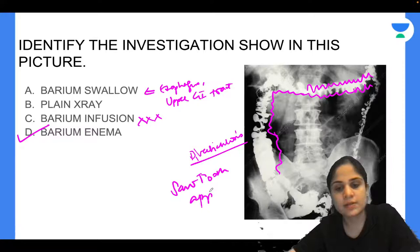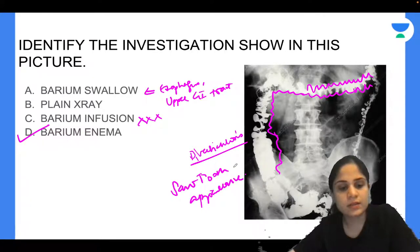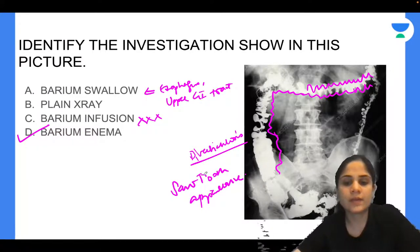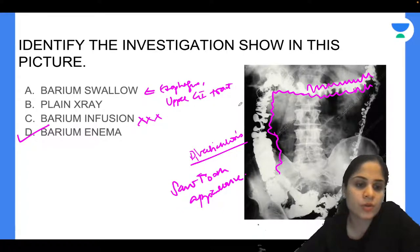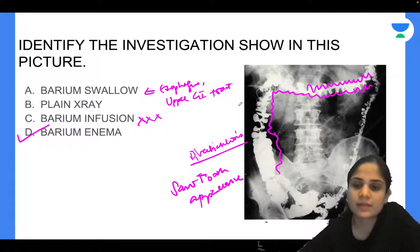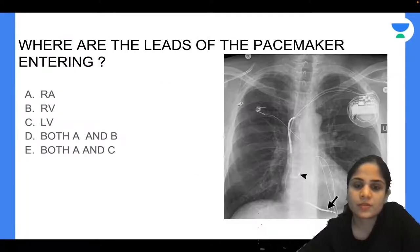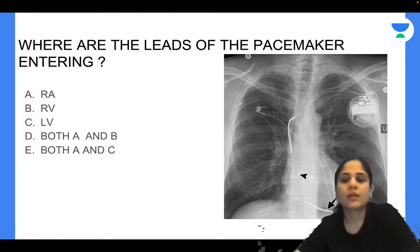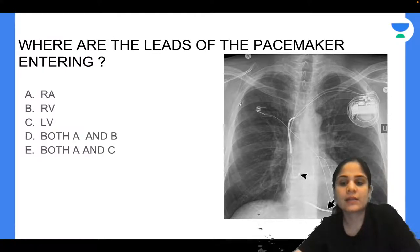Where are the leads of the pacemaker going? Options: right atrium, right ventricle, left ventricle, both A and B, or both A and C.